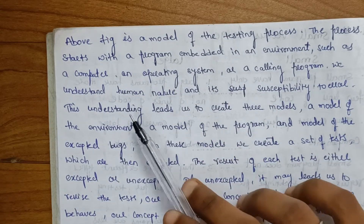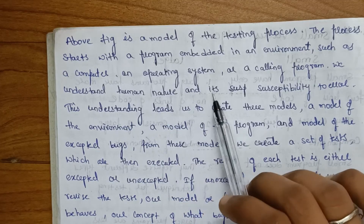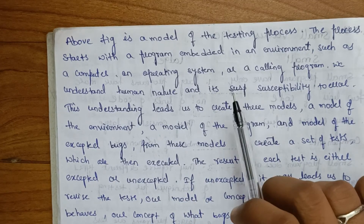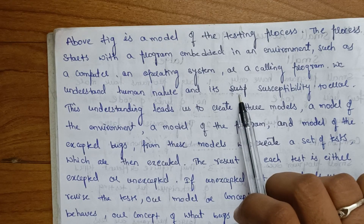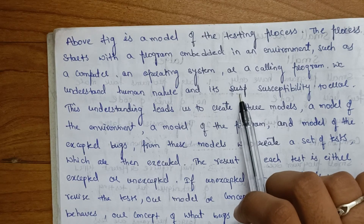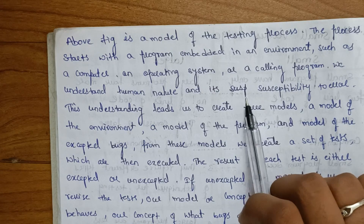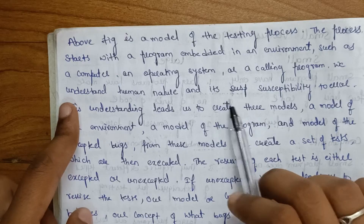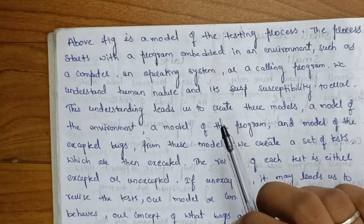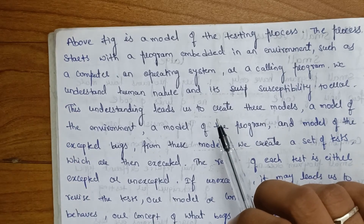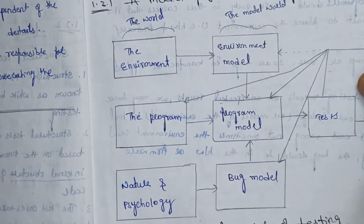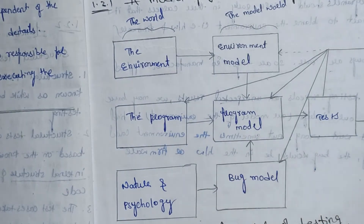In the environment, the program is embedded. We understand human nature and its susceptability to error. The bug is associated with nature and psychology — nature and psychology under human. We understand human nature and its susceptibility to error, so we will use the bug model to identify bugs.